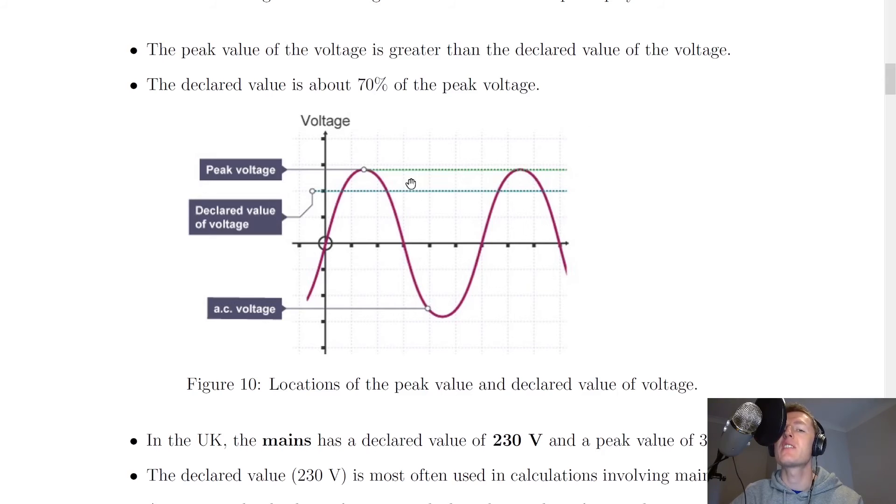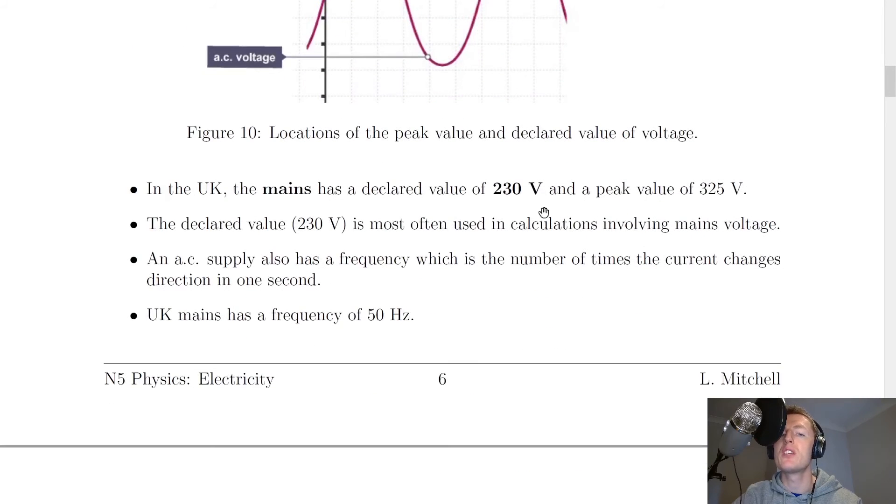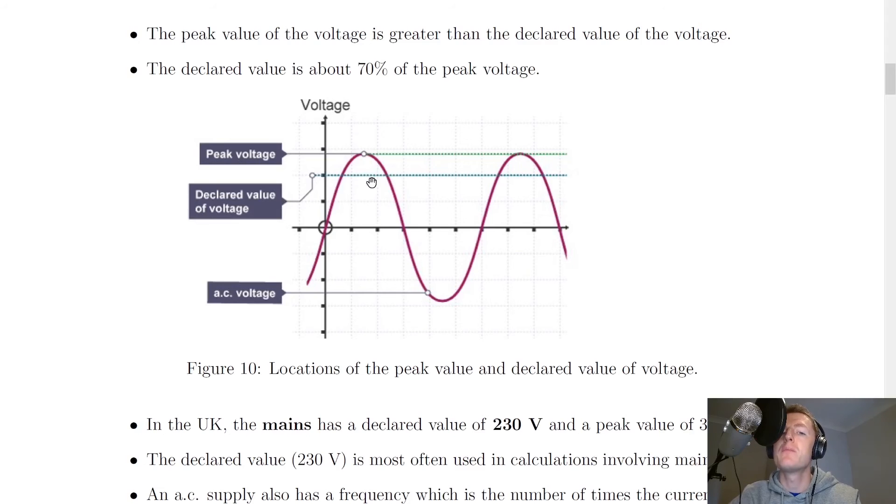So we can estimate to a good certainty that in the UK, what you'll get for a declared value of the voltage is around 230 volts and a peak value of around 325 volts. But as we just said, you're very unlikely to get 325 volts across your device. But it's a good rule of thumb to think about mains voltage as being 230 volts. So in this graph of voltage over time, you'll see that the declared value here is around 70% of the peak voltage. And this is our AC signal here.